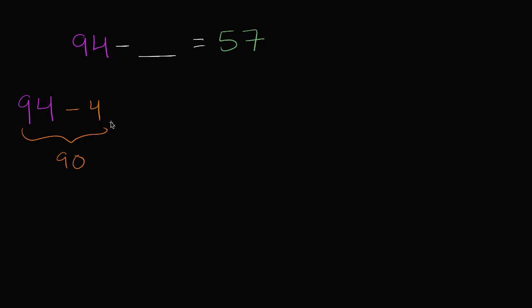And let's see, then I could subtract, I could subtract 20 to get to 60. I don't want to get lower than 57. So I'm going to subtract 20, 90 minus 20. Oh, sorry, I could subtract 30 to get to 60. So I could subtract 30 now. So 90 minus 30, this is going to be equal to 60.